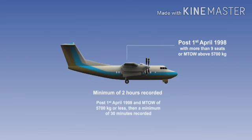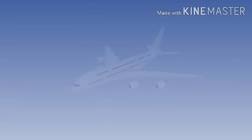Aeroplanes of 5,700 kilograms or less and registered on or after 1st of April 1998 need to record a minimum of 30 minutes of operation. The recorder must record as a minimum all the parameters as stated earlier in this lesson. It must start to record prior to the aeroplane moving under its own power until the aeroplane is unable to move under its own power after shutdown. The cockpit voice recorder must have a device to assist in being located in water.